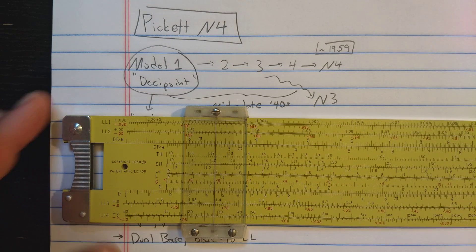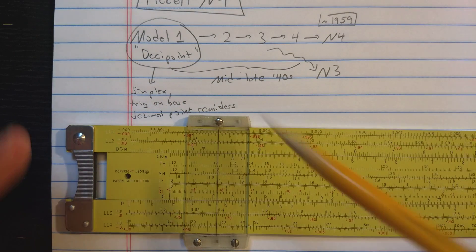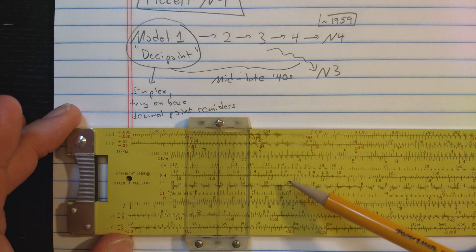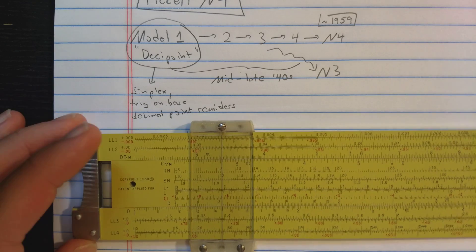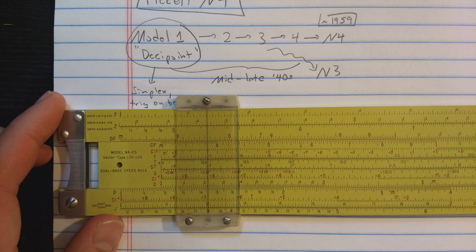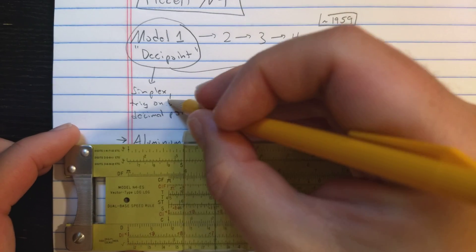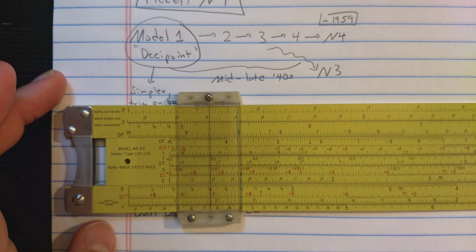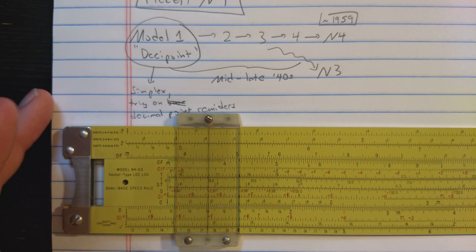So Pickett makes a slide rule in the mid-40s called the Model 1 DesiPoint Slide Rule, which is a simplex slide rule that has trig on the slide. And on the back it has a lot of decimal point reminders. So everything is on one side of the slide rule, but on the back are decimal point reminders.